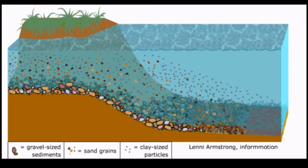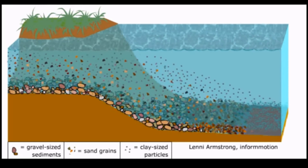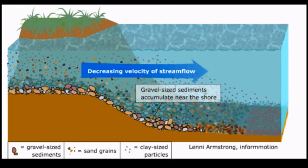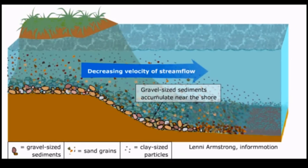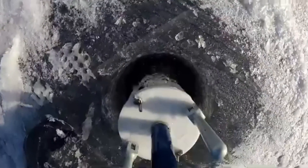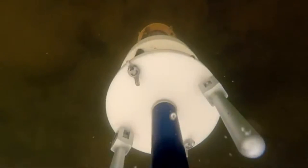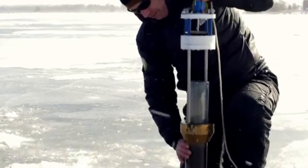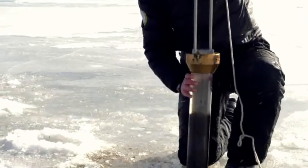Sediments — layers of sediment at the bottom of lakes and oceans can reveal information about past climate and environmental conditions. For example, the presence of certain types of fossilized pollen can indicate the types of vegetation that were present in a region, which can be used to infer past climate.